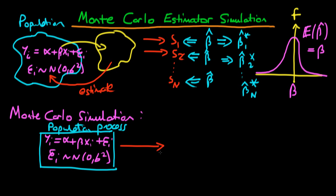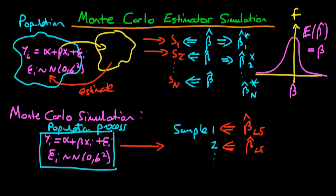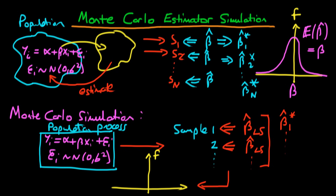We can use this designed population process to generate samples — for example, a first sample of 100 individuals, a second sample of 100 individuals, and so on for a large number of samples. We then apply our estimator, say the least squares estimator, on each of these samples. From applying least squares to each sample we get out slightly different values of the estimated beta, which we call beta hat star — from beta hat star one all the way through beta hat star n. We can then draw a histogram of the frequency of each of those values, which allows us to draw a sampling distribution for our estimator.